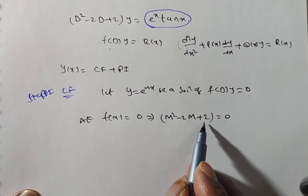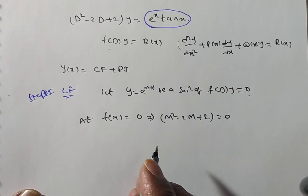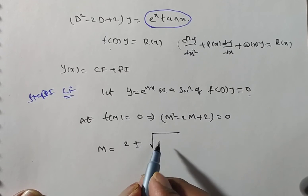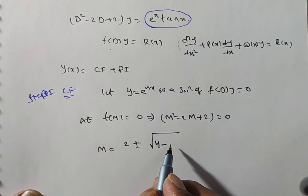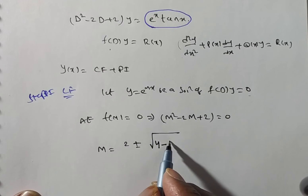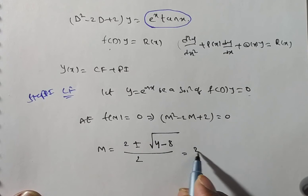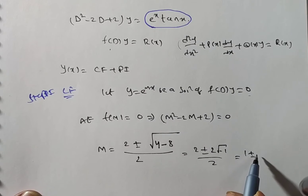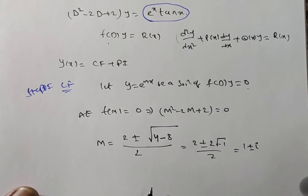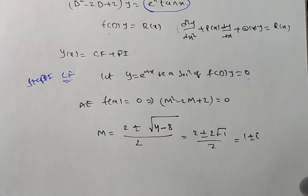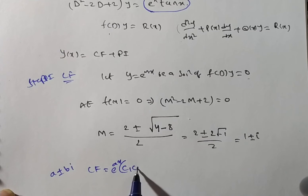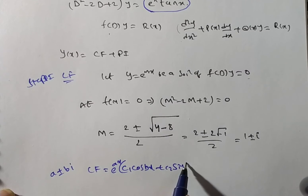To find the roots, we use the quadratic formula: m = (-b ± √(b² - 4ac)) / 2a. So m = (2 ± √(4 - 8)) / 2 = (2 ± √(-4)) / 2 = 1 ± √(-1) = 1 ± i. The roots are complex, of the form a ± bi, so the complementary function is e^(ax) · (c₁ cos(bx) + c₂ sin(bx)).